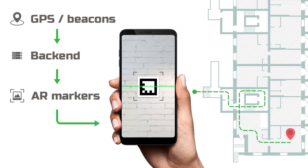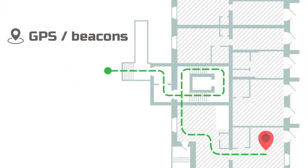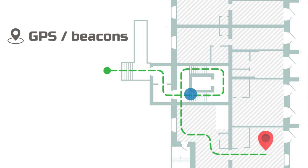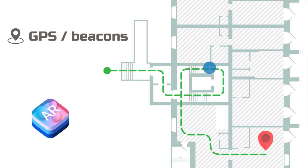While the user walks along the route, the app keeps receiving markers for new areas using data from GPS or beacons in order to recognize these markers and update the precise location of the user. Intermediate location is calculated using the world tracking feature of ARKit via motion sensors and visual odometry.